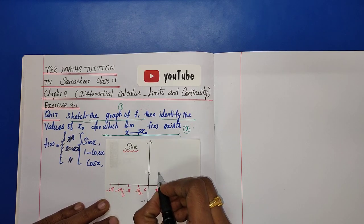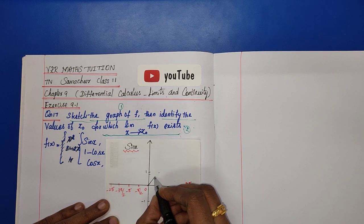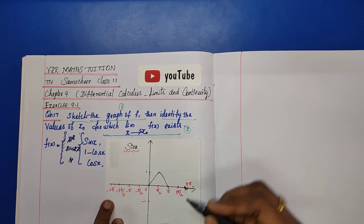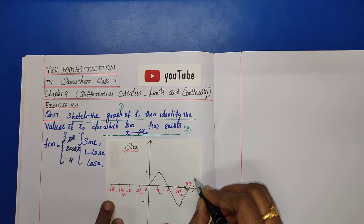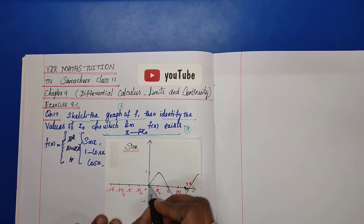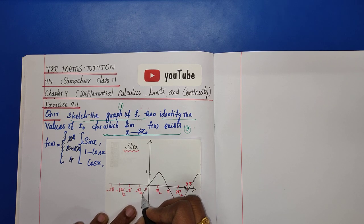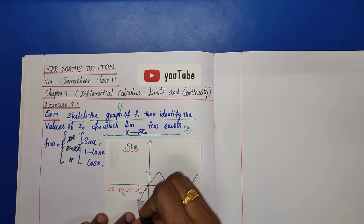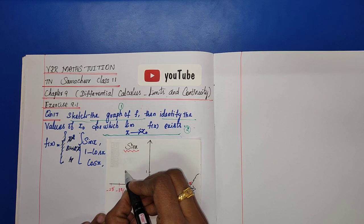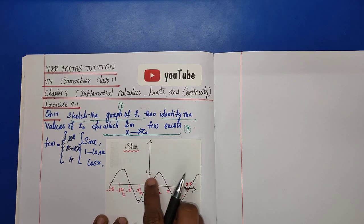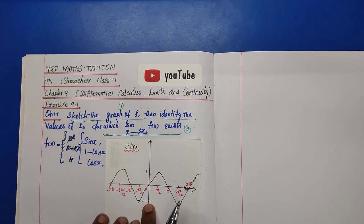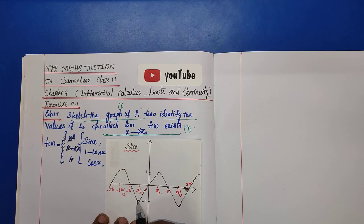The sin x graph has maximum value 1 and lowest value minus 1. Key values: sin 0 = 0, sin(pi/2) = 1, sin pi = 0, sin(3pi/2) = minus 1, sin(2pi) = 0. On the left side, the graph continues symmetrically with values minus 1 at the appropriate points. This completes the sin x graph.